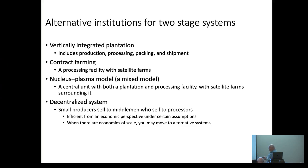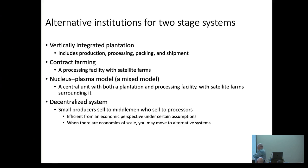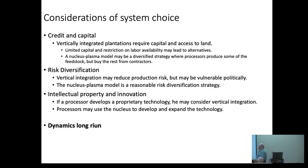You have different types of institutions. You can have vertical integration. You can have contract farming. You can have a plantation that buys from others. There are many ways to look at it.